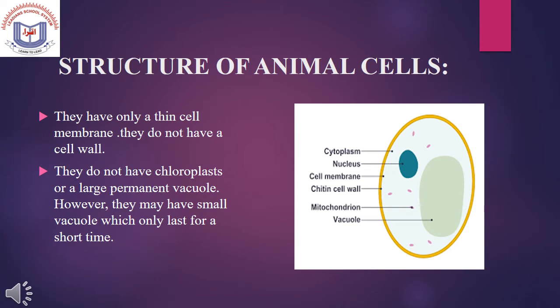Structure of Animal Cells: Animal cells have only a thin cell membrane and they do not have a cell wall. They do not have a chloroplast or a large permanent vacuole. However, they may have small vacuoles which only last for a short time.